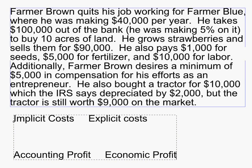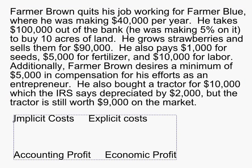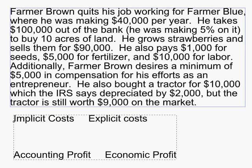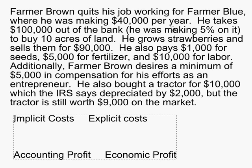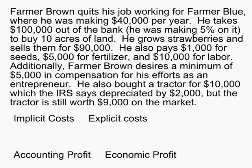Looking at these different costs, let's identify which involved Farmer Brown taking money and handing it to someone else. This forty thousand dollars he was making before he quit — is Farmer Brown this year going to be taking forty thousand dollars out of his pocket and handing it to someone else? No. That's forty thousand dollars he won't make now, but it's not money coming out of his pocket. So it's not an explicit cost. The forty thousand dollars he's not making anymore is an opportunity cost, and that's an implicit cost.